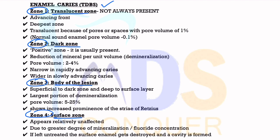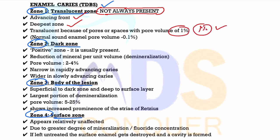Most caries starts from the surface, so the surface zone is always present, whereas the deepest layer may be absent in some histological slides. The Translucent Zone is not always present. As it is the deepest zone, it is the advanced front — it acts like an engine guiding the occurrence of dental caries. The Translucent Zone has a pore volume size of 1%, whereas normal enamel has a pore volume of only 0.1%, meaning this zone has 10 times more pore size.